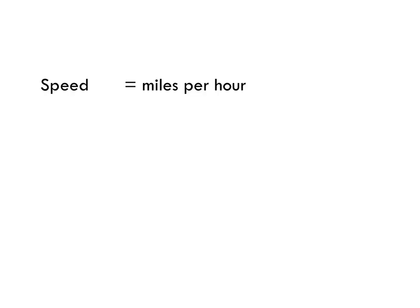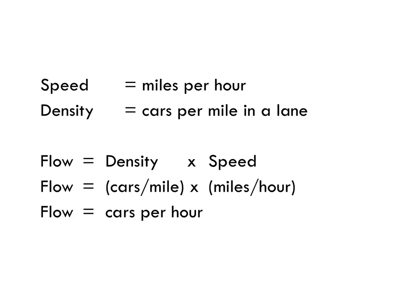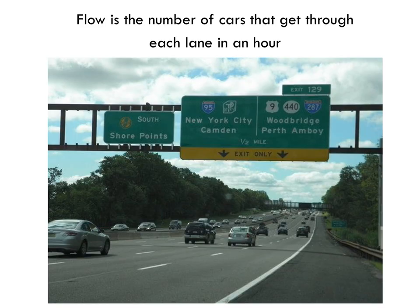So we've talked about speed, which is pretty intuitive, and we've talked about vehicle density — the number of cars per mile in a lane. Traffic flow is density times speed, or the number of cars per hour passing a point on a roadway. You can think of flow as the number of cars who pass under this sign each hour.